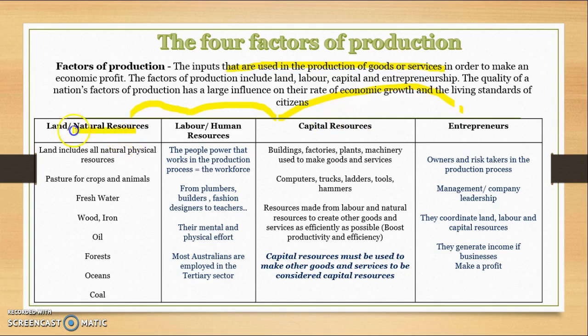Land, or natural resources, refers to all the natural resources we use in the production process. That can be fresh water, wood, iron, oil, oceans, coal — any time we use natural resources in order to make goods and services.